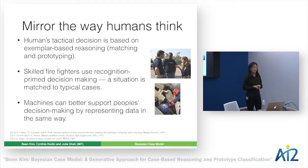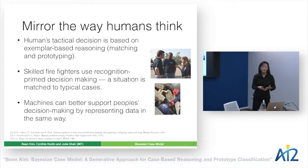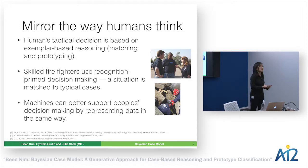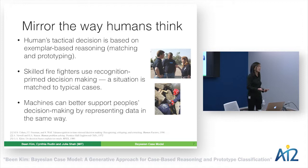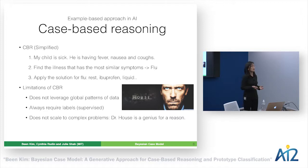Skilled firefighters do exactly this. They encounter a new fire, identify it as similar to something they saw in 1996, modify the solution, and apply it. For machines to better support human decisions, we need to present information in the form that humans think — using examples to explain machine learning results.